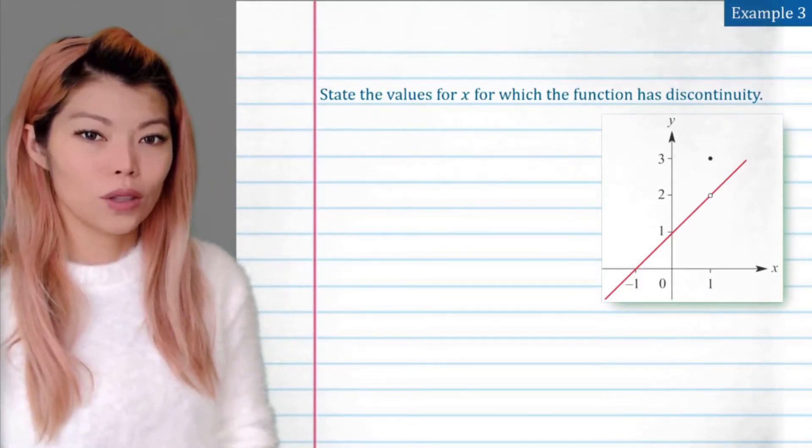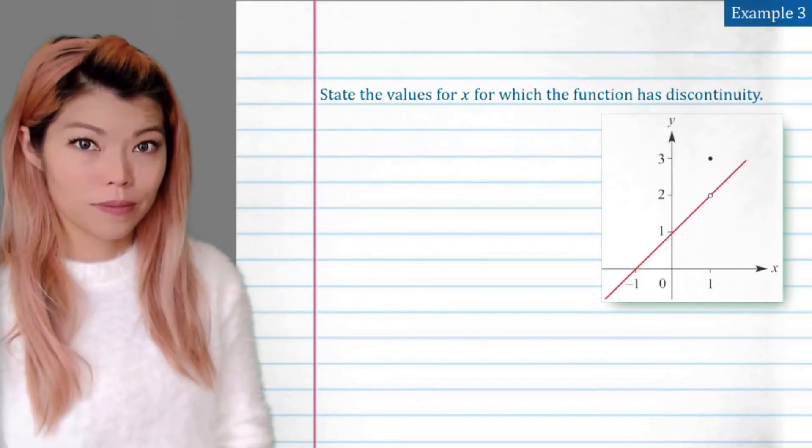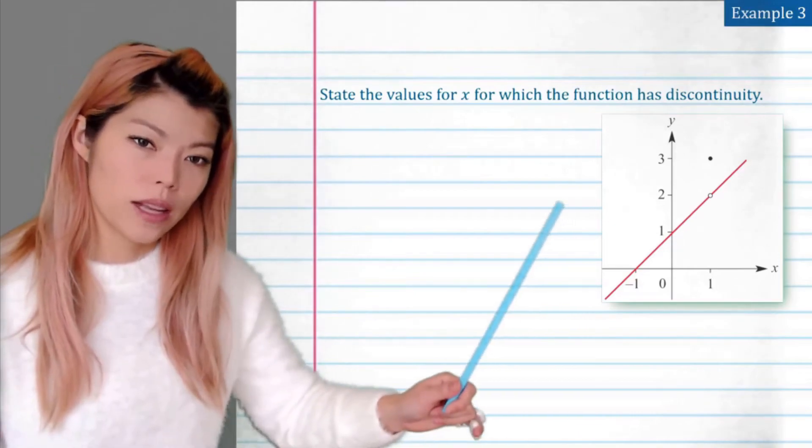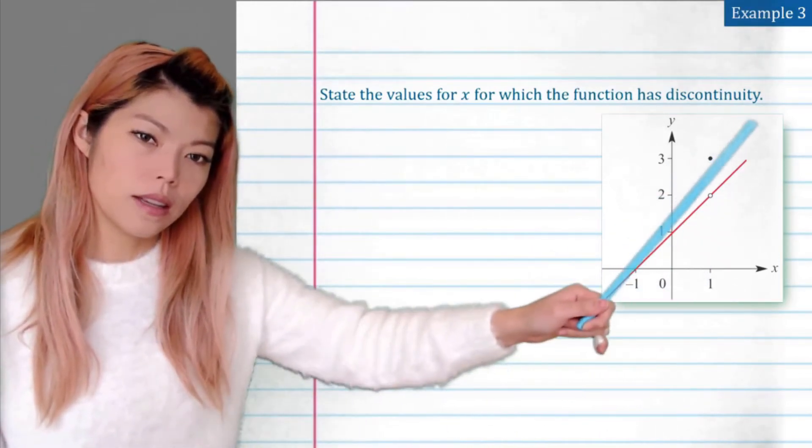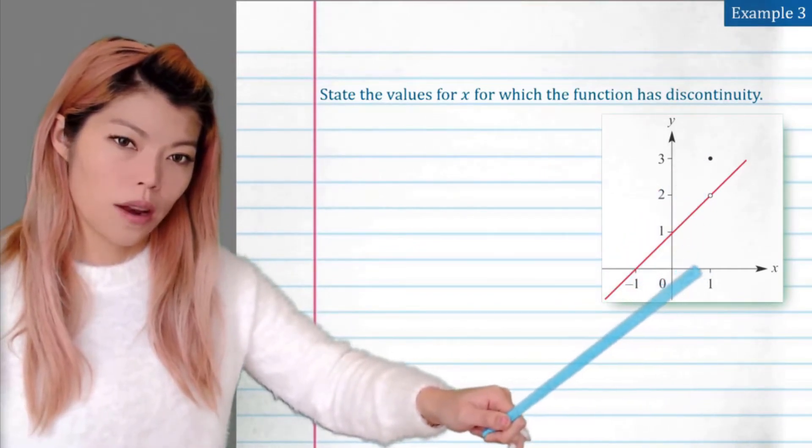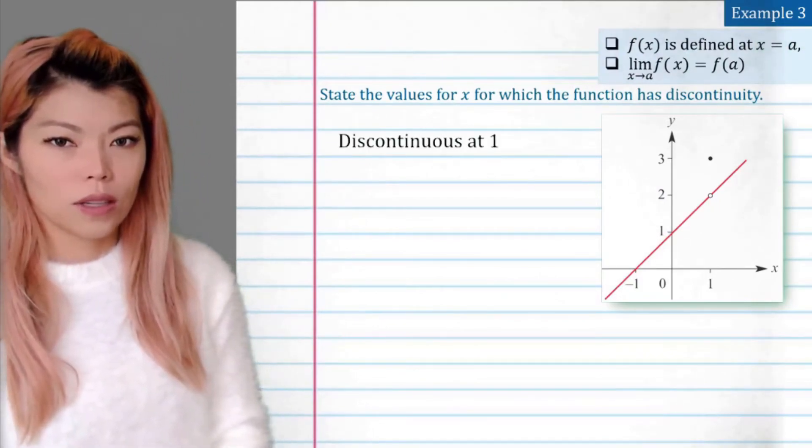Example 3, state the values for x for which the function is discontinuous. Before we even answer this question, let's see our prediction. We can see that the graph here is continuous, except for this hole over here. There's a value of 3 at x equals 1. But it's not continuous there. So we can see that it is discontinuous at 1.